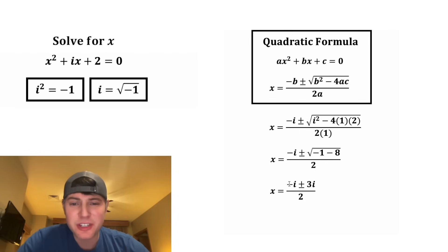So now we have x is equal to negative i plus or minus 3i over 2. This plus or minus is giving us two solutions. We have one for the plus and one for the minus. And now for the first one, negative i plus 3i is equal to 2i. And 2 divided by 2 cancel each other out. So we have x equals i for the first one.